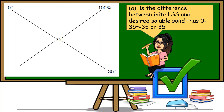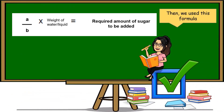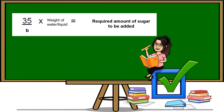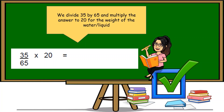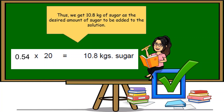A is the difference between initial soluble solid and desired soluble solid. Thus, 0 minus 35 equals negative 35, or 35. B is the difference between purity of sugar and desired soluble solid. Thus, 100 minus 35 equals 65. Using the formula, we write 35 for A and 65 for B, and 20 for the weight of the water or liquid. We divide 35 by 65 and multiply the answer by 20. Thus, we get 10.82 kg of sugar as the required amount of sugar to be added.